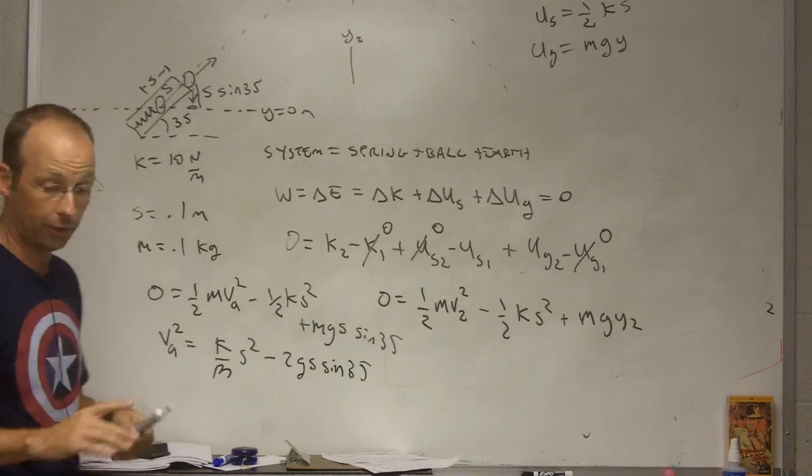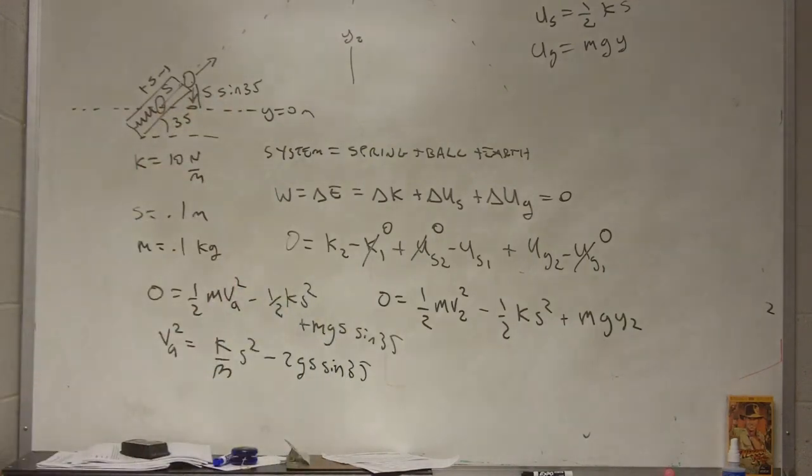And then, I can take the square root of both sides. So, let me get a value, a numerical value for that. Okay. So, I get 10.